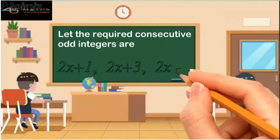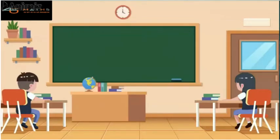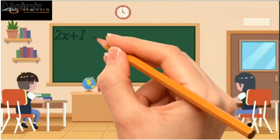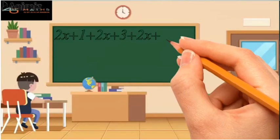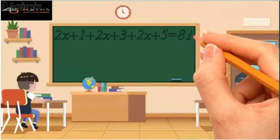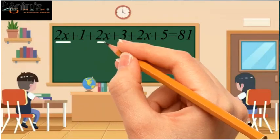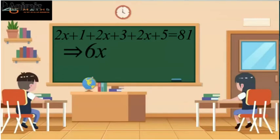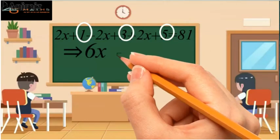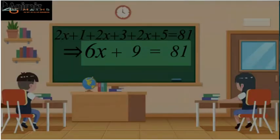Now according to the given conditions, since the sum of the three consecutive integers equals 81, we will add these three numbers and equate them to 81. First, adding the terms involving x gives 6x, and then adding the constants 1 plus 3 plus 5 gives 9. The obtained equation is clearly a linear equation in x, that is 6x plus 9 equals 81.